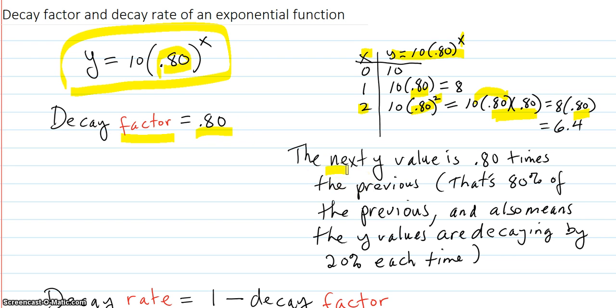So the next y value is point 80 times the previous. That's 80% of the previous. But it also means that the y values are decaying, dropping by 20% each time. They're going down from 10 to 8, from 8 to 6.4. They're dropping by 20% every time.